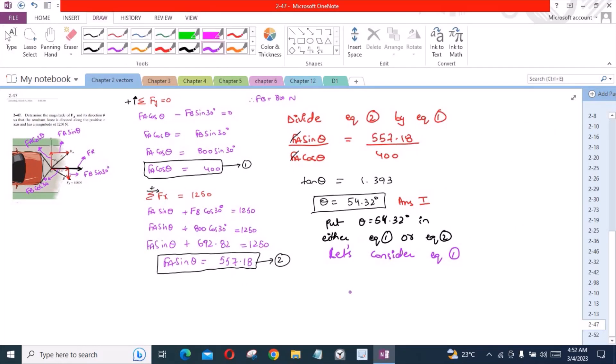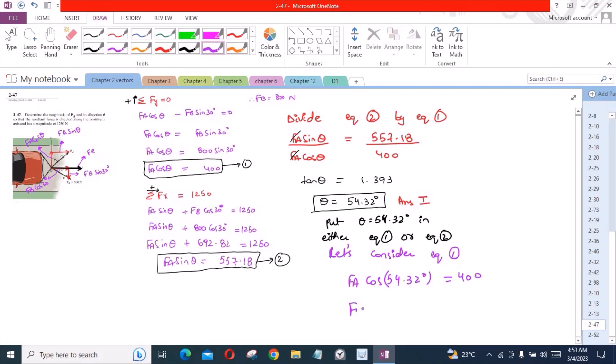So we have Fa cos 54.32 degrees equals 400. Fa equals 685.89 newtons. This is our second answer and this is it for this problem.